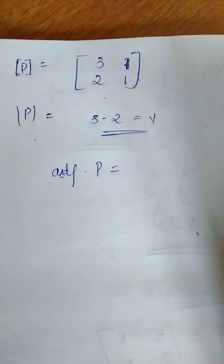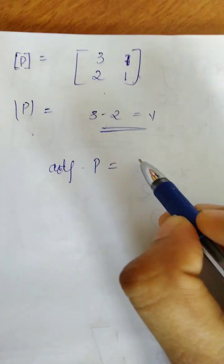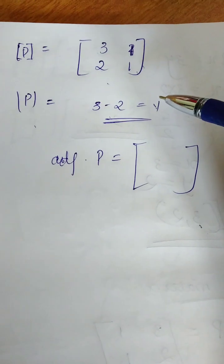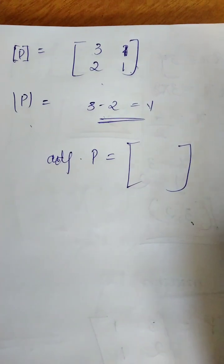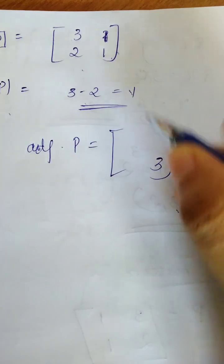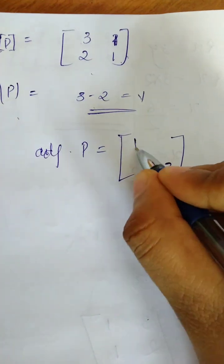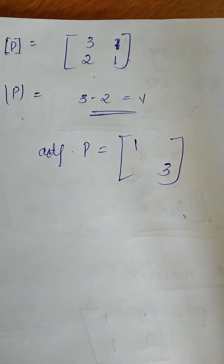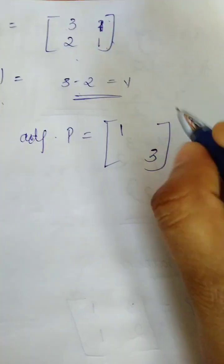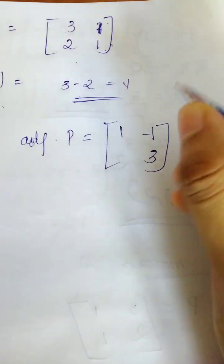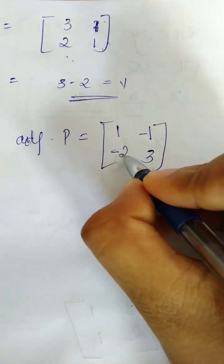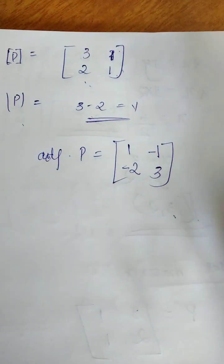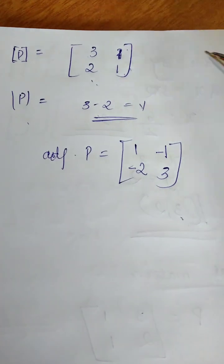Now we compute the adjoint of P. For a 2 by 2 matrix we swap the diagonal elements and change the sign of the off-diagonal elements. We put P inverse equal to 1 by determinant P times adjoint P.